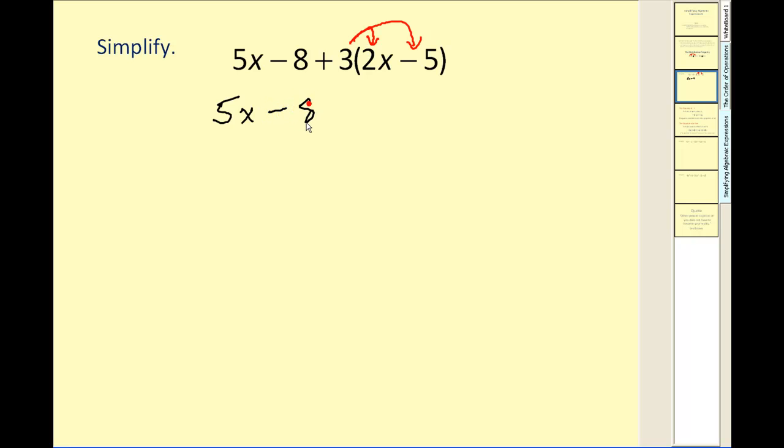We would have 5X minus 8 plus 6X minus 15. Now if we combine our like terms, here we have 5X and here we have 6X. Here we have minus 8 and minus 15. So adding the coefficients, 5X plus 6X would give us 11X.